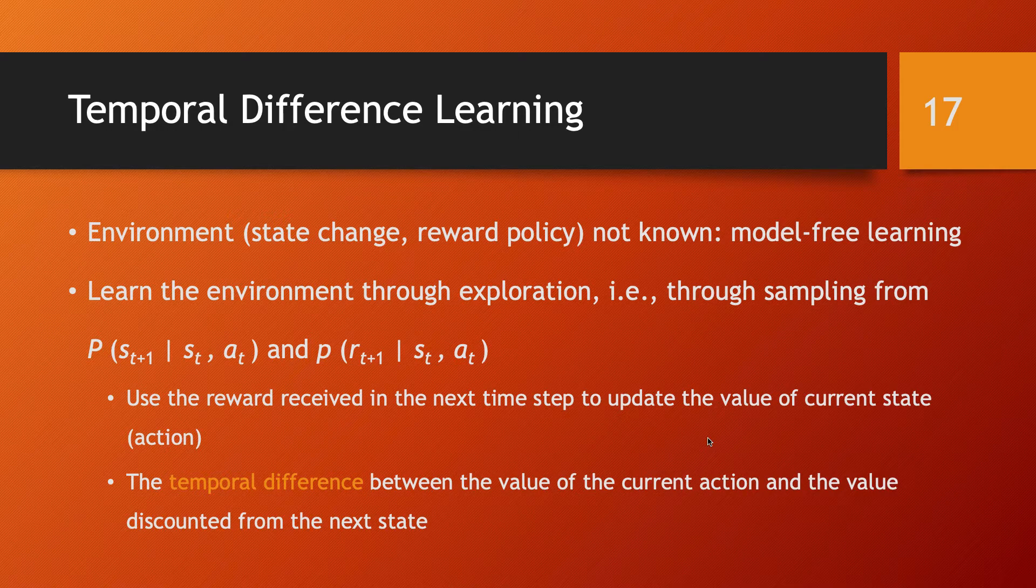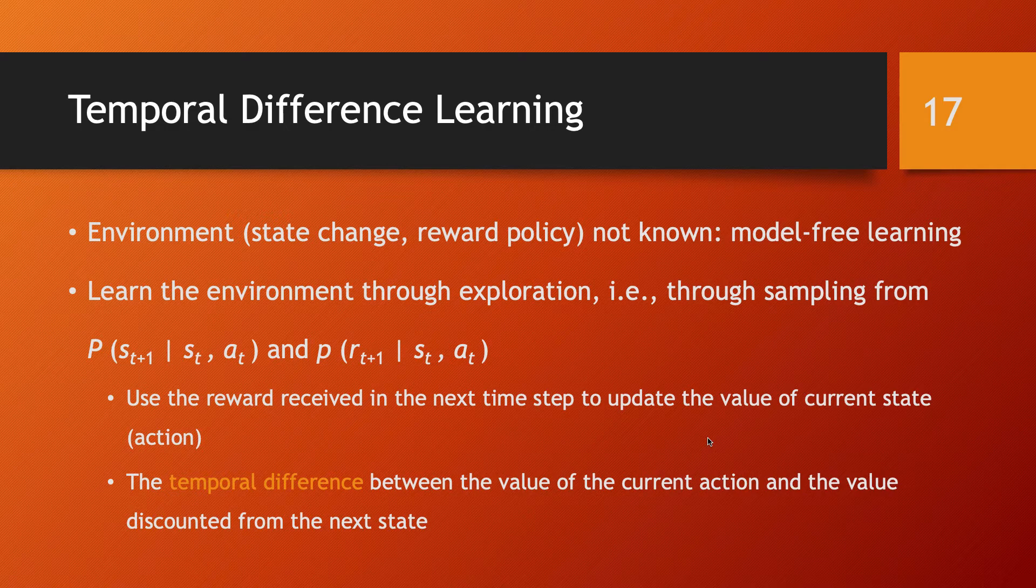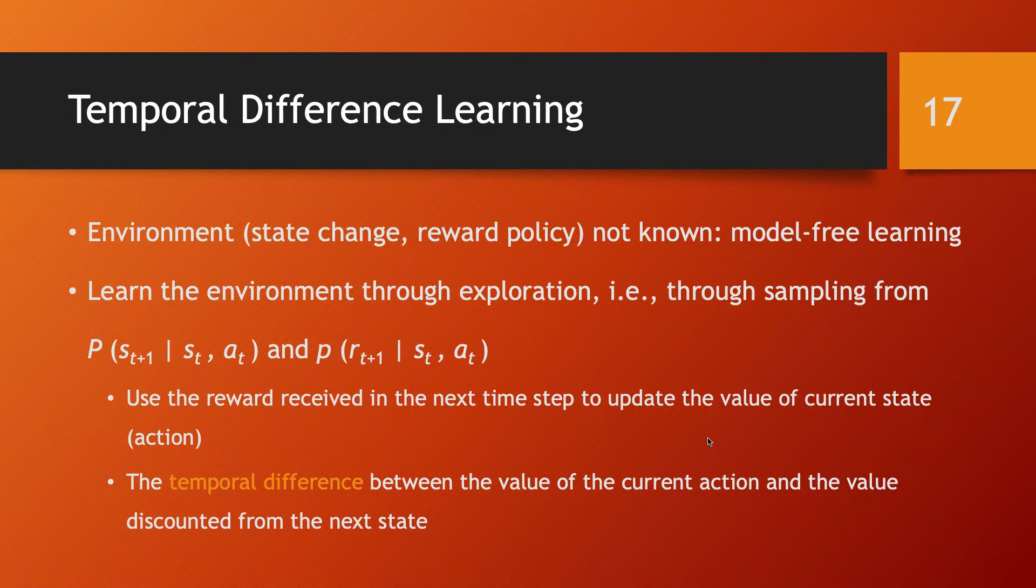And what this means really is that you are sampling from the probability distribution of the state change and the probability distribution for the reward function.